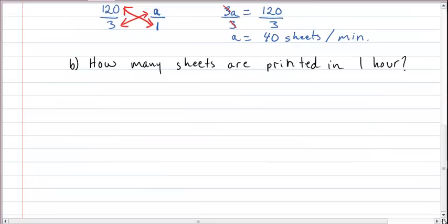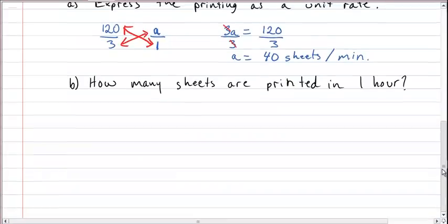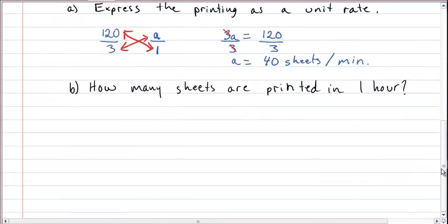Now we have a second question here. It simply says, well, how many sheets are printed in an hour? So we can write it like this. If we know 120 sheets are printed in 3 minutes, what we're trying to find out is how many sheets, let a be there again, are printed in 60 minutes.